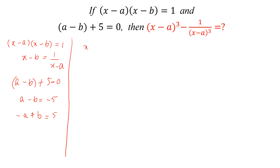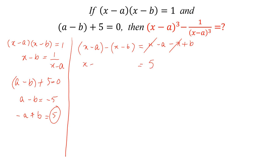Now, we can write (x - a) - (x - b) = x - a - x + b. The x terms cancel, and -a + b = 5. So we get: (x - a) - (x - b) = 5, and substituting x - b = 1/(x - a), we get (x - a) - 1/(x - a) = 5. Let this be equation 1.